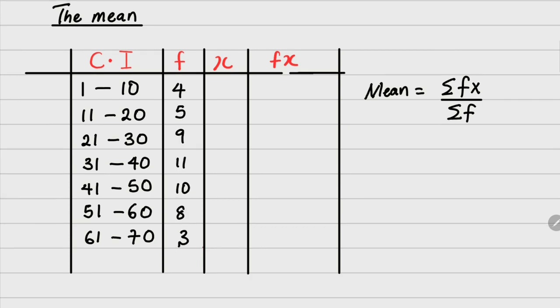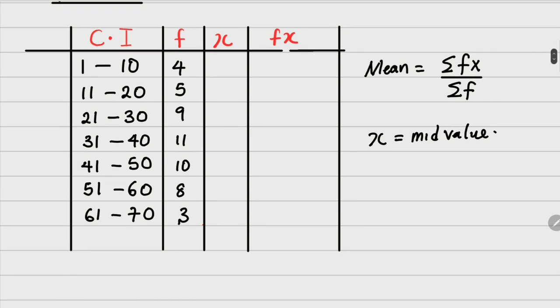We have everything there, but we need to know what is x. x is known as midvalue. How do you find it? Go straight to the class interval, then pick the upper class interval and the lower class interval, add it and divide by 2. For example, the first one is 1 and 10, so 1 plus 10 divided by 2, which is 11 divided by 2, which is 5.5.